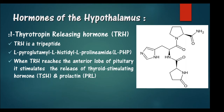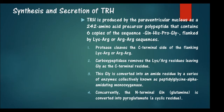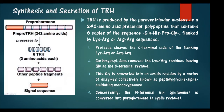When TRH reaches the anterior lobe of the pituitary, it stimulates the release of thyroid stimulating hormone (TSH) and prolactin. The synthesis and secretion of TRH is by the paraventricular nucleus, and it is synthesized as a 242 amino acid precursor polypeptide.